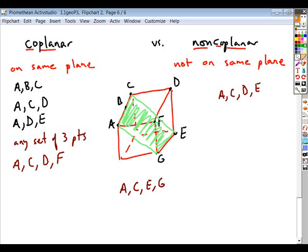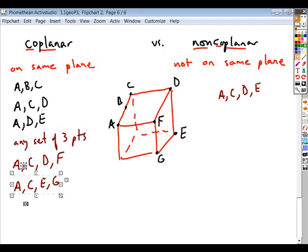So A, C, E, and G then would be considered what type of points? Coplanar. So this set, even though it has four, again, and they're not on the same face that's shown, you can still connect them with a single plane.